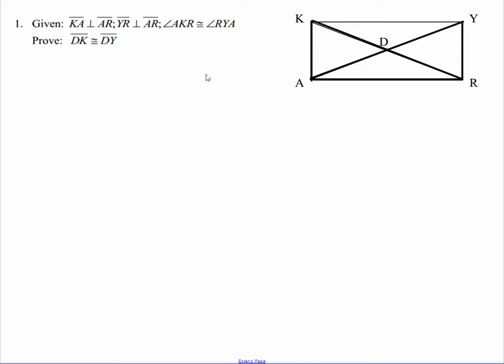Now, the strategy overall: we want to prove that DK and DY are congruent. And ideally, that means we probably get these two triangles right here, KAD and YDR, congruent as well.